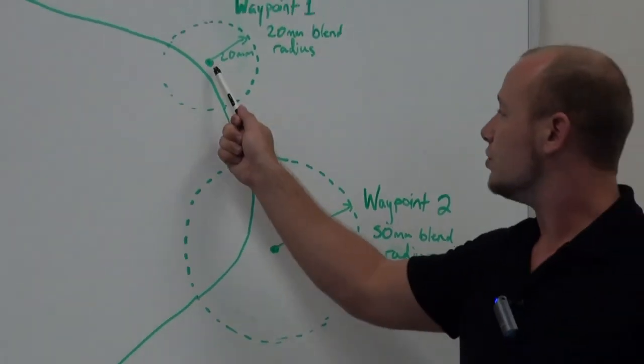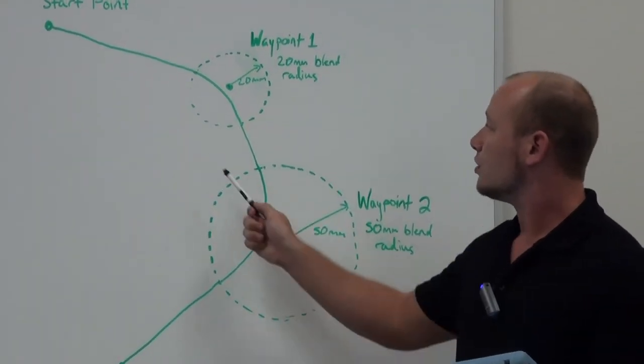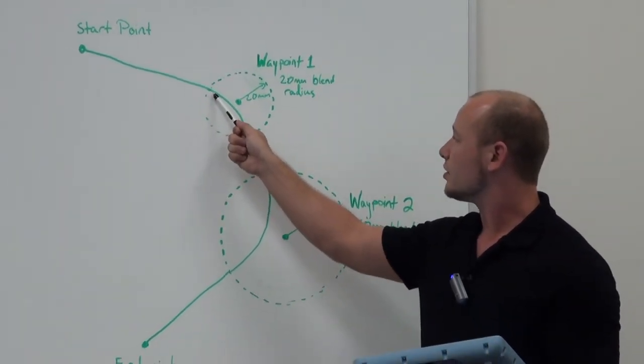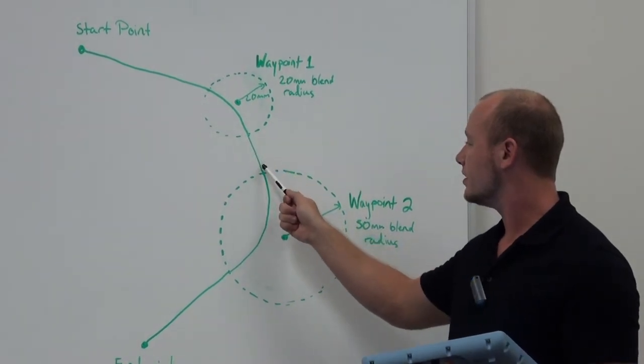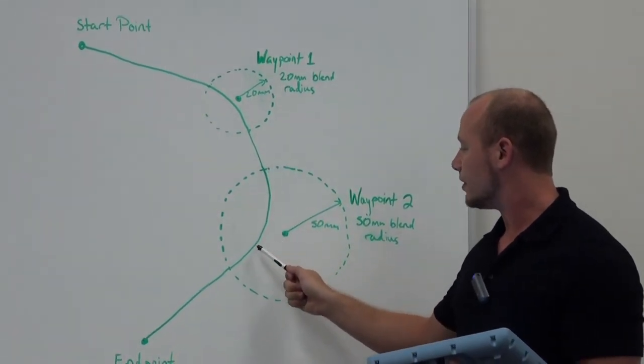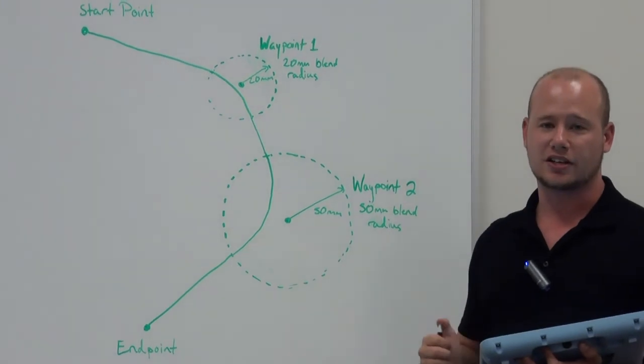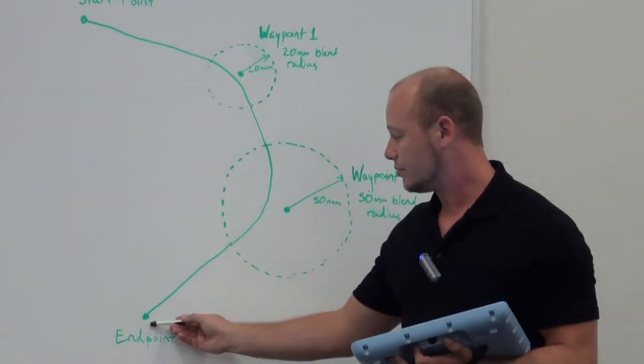Now instead of coming to the actual waypoint that you program, the robot will enter this radius, curve around, and then exit. And same for this one. It will curve around and it enters and exits in a perpendicular manner and then come to your end point here.